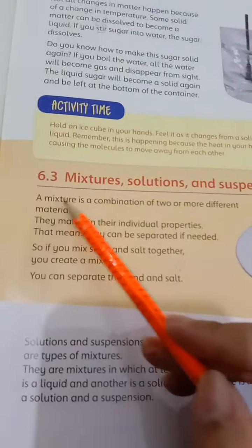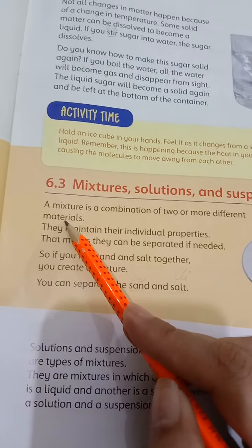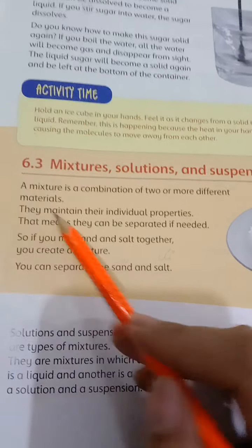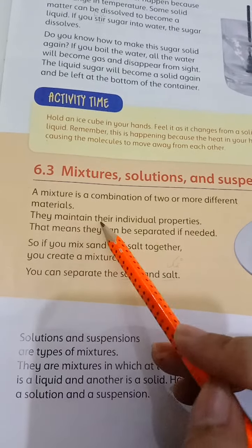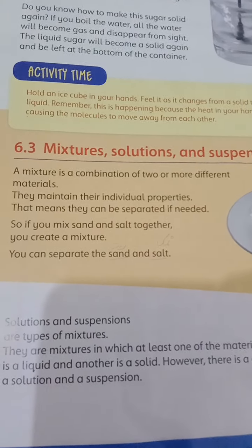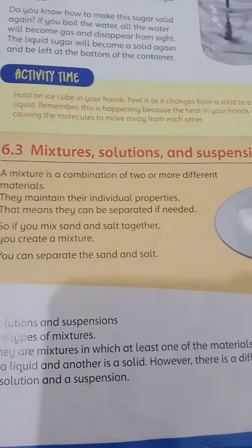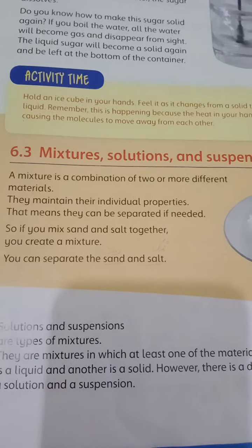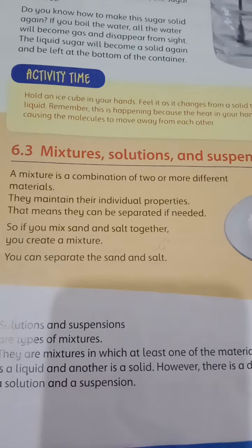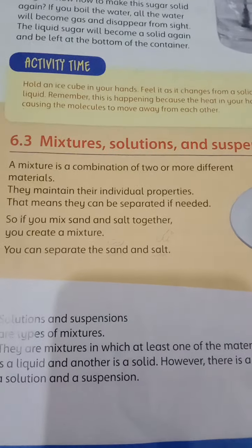These are three topics. A mixture is a combination of two or more different materials. They maintain their individual properties — in a mixture, each material keeps its own individual properties. For example, if you mix water, a sweetener, and a syrup like Tang or Rooh Afza together, that is a mixture.